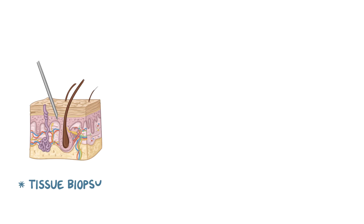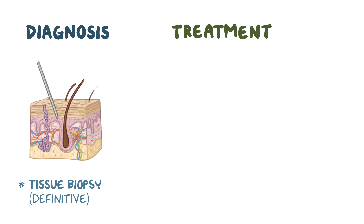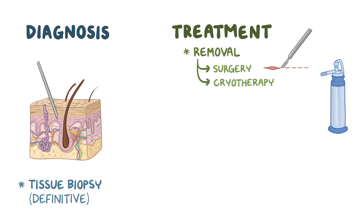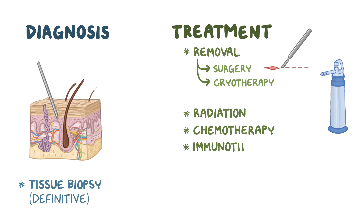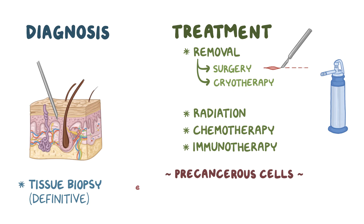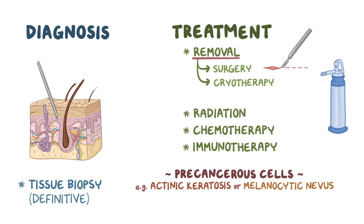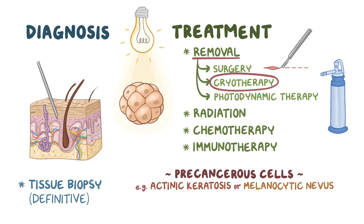A tissue biopsy is needed to make a definitive diagnosis of skin cancer, and treatment options include removal with surgery or with cryotherapy, where the tumor is frozen off. Radiation, chemotherapy, or immunotherapy may also be options. Precancerous cells, like actinic keratosis or melanocytic nevus, are typically removed to prevent their progression to skin cancer with cryotherapy or photodynamic therapy, which is where light is used to induce cellular death.